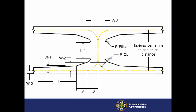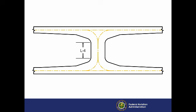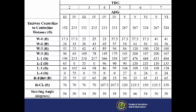We use similar variables, including a new length, L4, to define configurations controlled by ADG as shown on this parallel taxiway design. Length L4 is the length of the straight section between two 90-degree turns. The AC includes a table for all known combinations of TDG and ADG. This table identifies the taxiway centerline to centerline distance, widths, lengths, radii, and steering angle for each group.